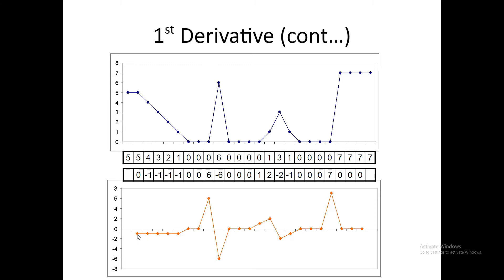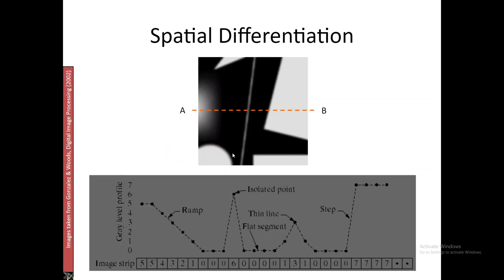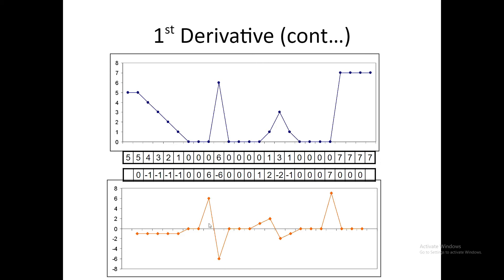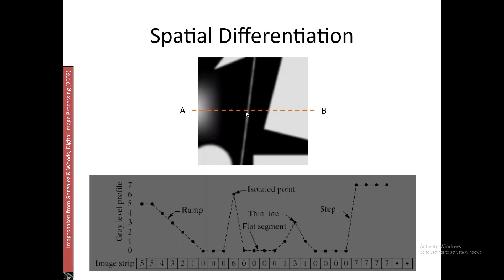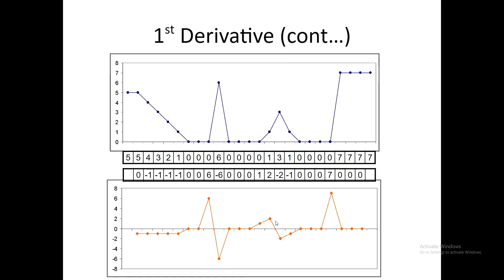Now if I try to plot this, you will see that it is 0, then minus 1, minus 1 — getting values around -1 — and then it goes up to 6 and then comes to -6. You will notice that at these isolated points I am getting a spike, and this is known as a zero crossing — I am coming from a positive to a negative value, crossing 0. Similarly, when I cross the small line of 3 pixels I am again getting a zero crossing.